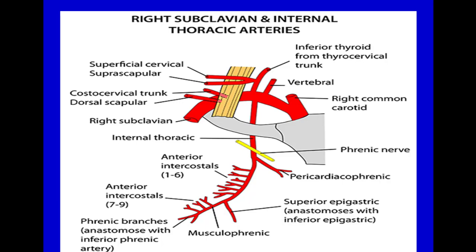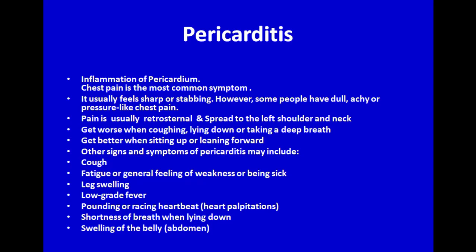To understand the blood supply of the pericardium, from the first part of the subclavian artery arises the internal thoracic artery. This artery gives pericardiophrenic branches that supply the pericardium. Inflammation of the pericardium is called pericarditis, and it is usually present as chest pain.